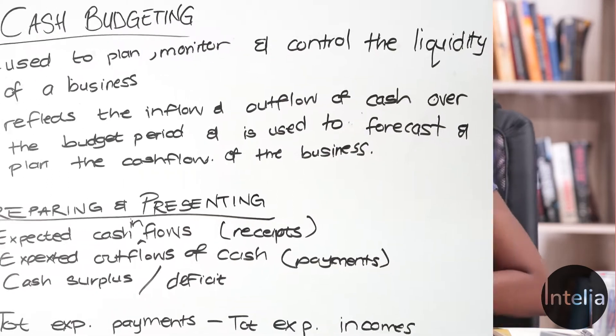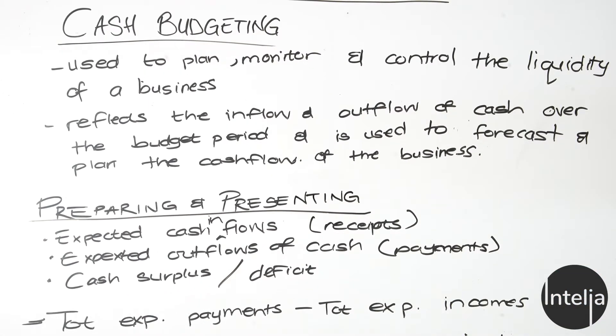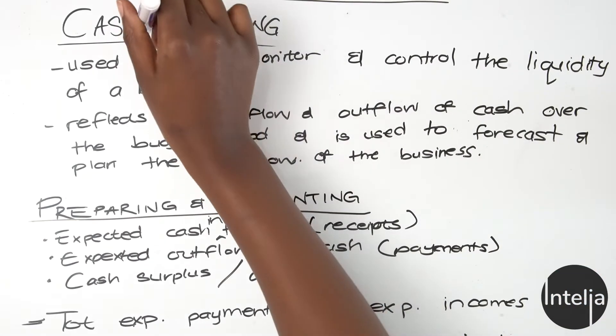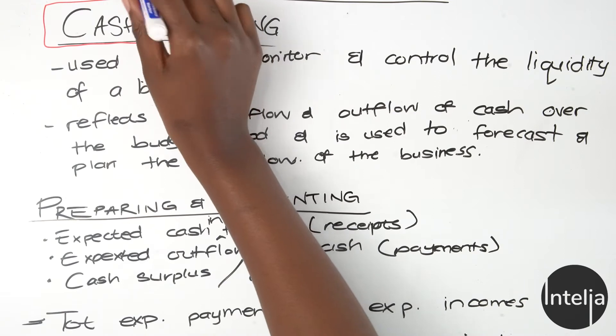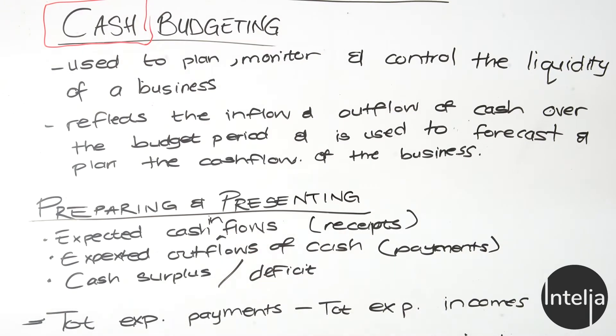Hi Grade 12s, welcome to another video on budgeting. We spoke about general budgeting — what it is used for, how we budget, and who uses the budgeting statements. Now I'm going to tell you about cash budgeting. The keyword here is cash, and this just means that we are only dealing with cash or expected cash.